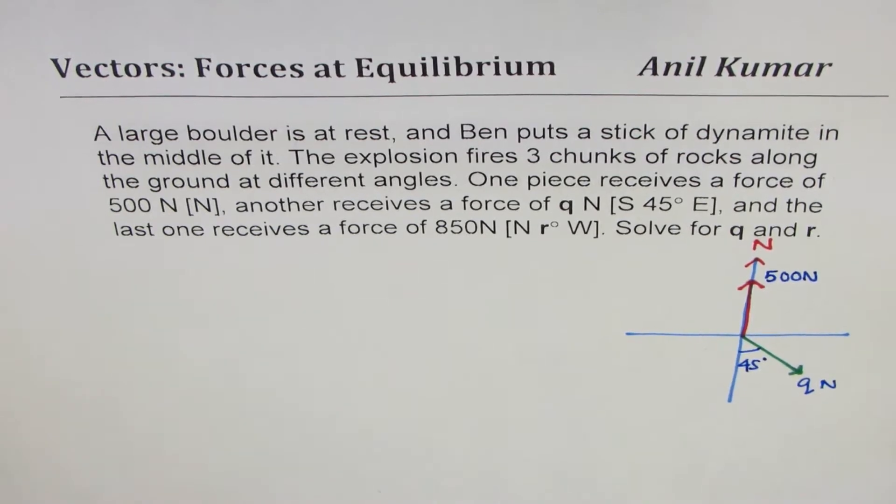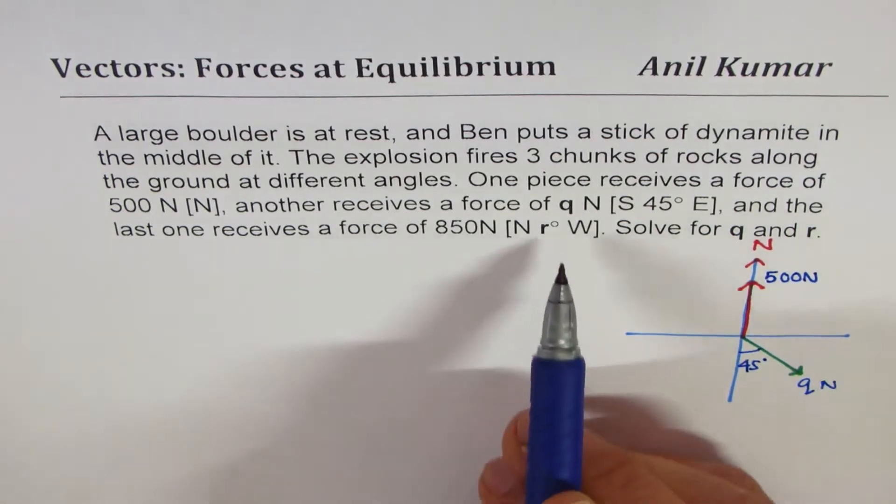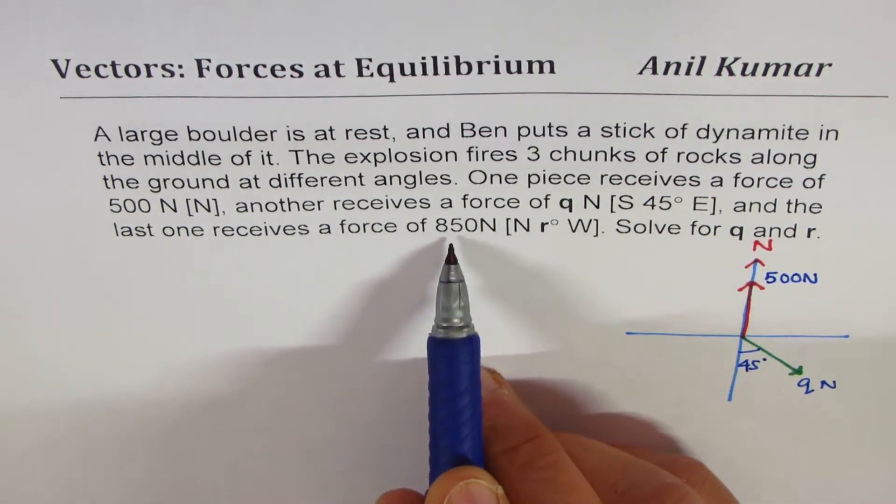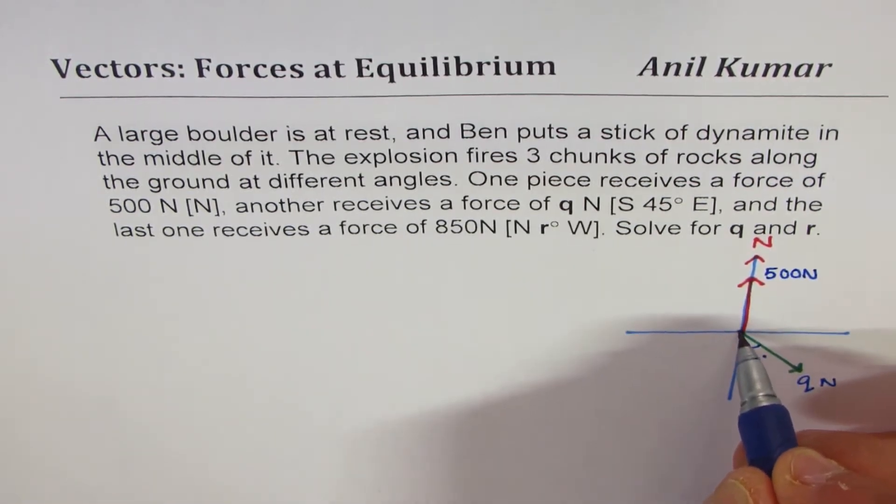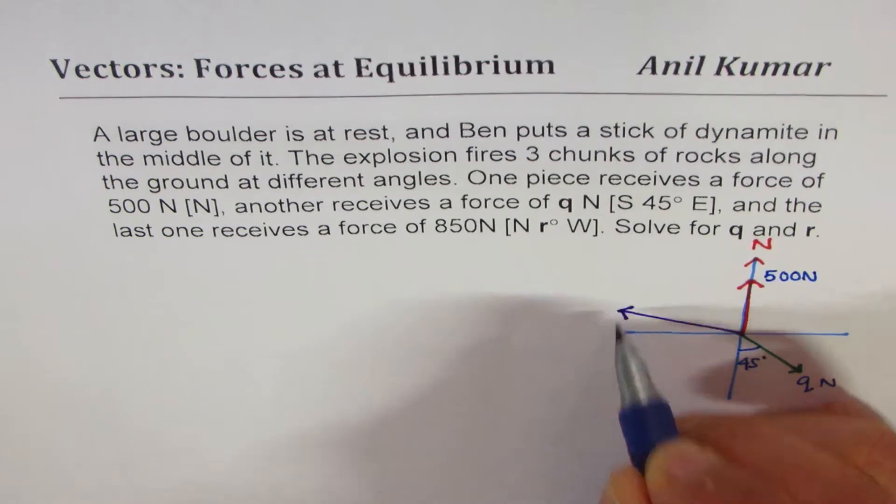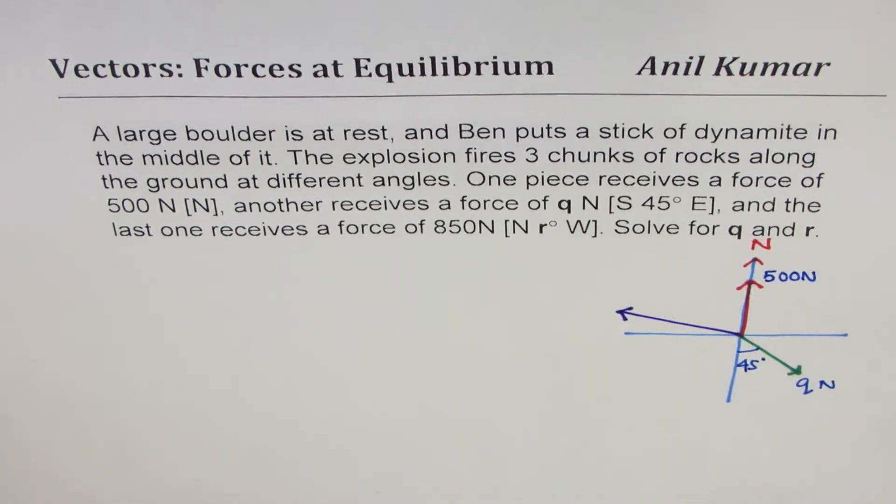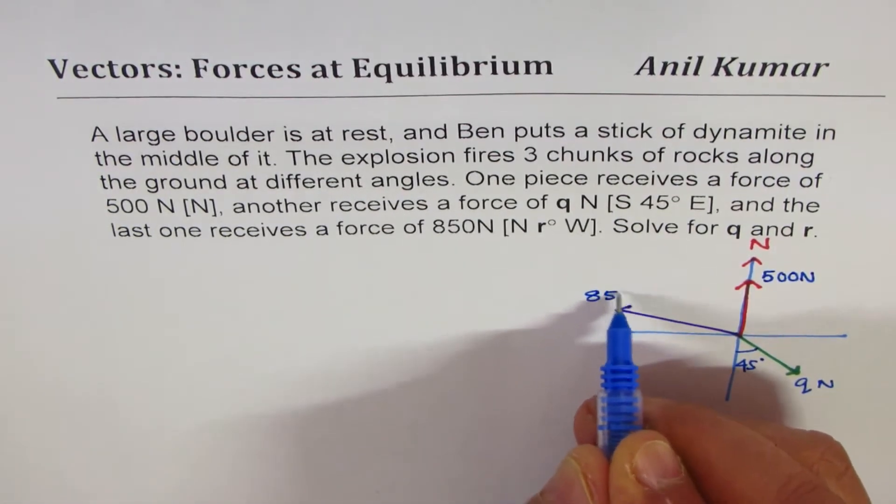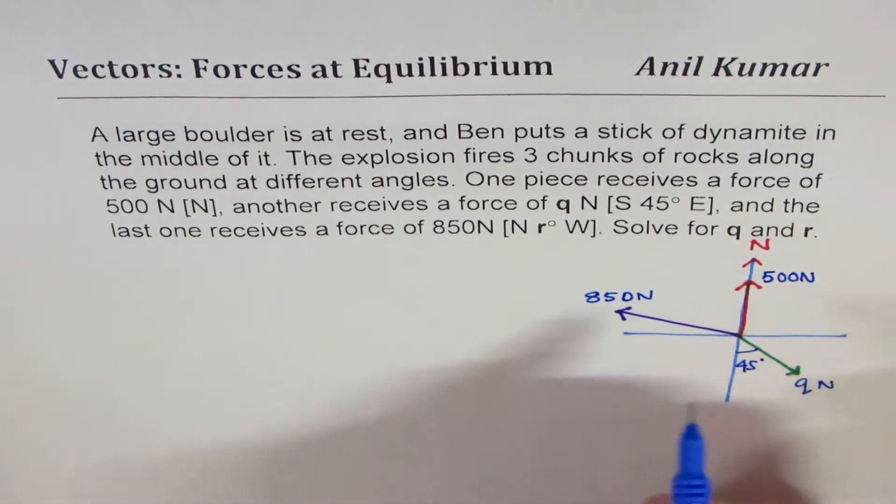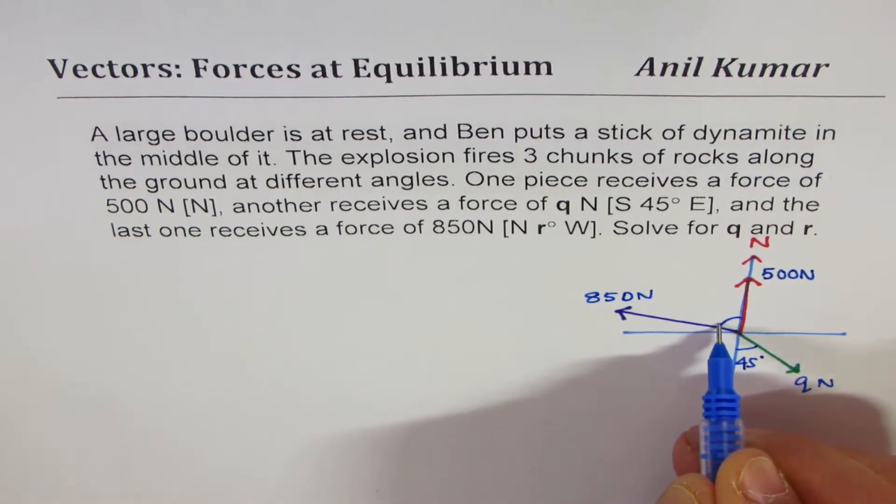The third one here is, we don't know the angle, 850 newtons towards west from north, so let's keep it kind of like this. And this force is 850 newtons, and it is r degrees.